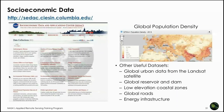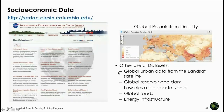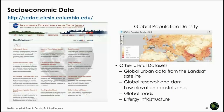SEDAC (Socioeconomic Data and Applications Center) from Columbia University provides socioeconomic datasets useful for urban flood risk reduction, including global population density, global urban data from Landsat, global reservoir and dam information, low-elevation coastal zone data, global roads, and energy infrastructure. These datasets help identify where populations and critical infrastructure are located, supporting flood risk management and planning.